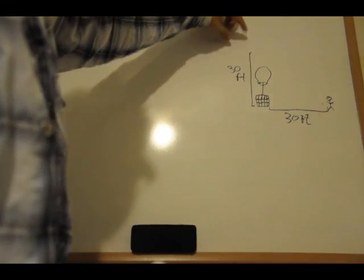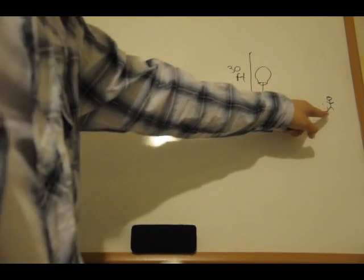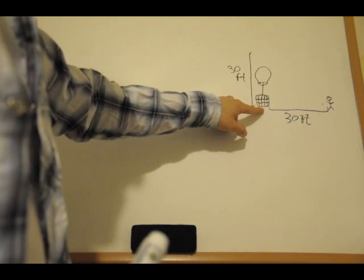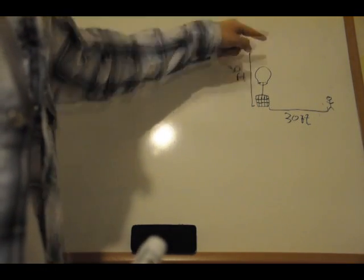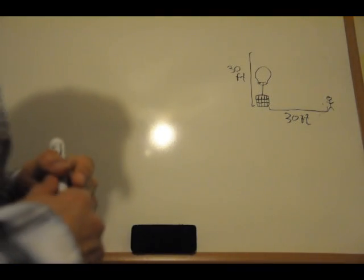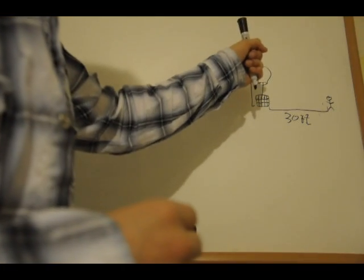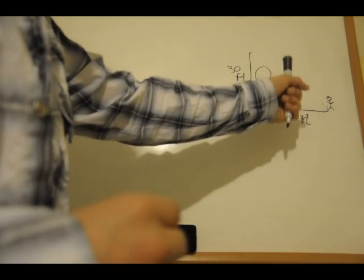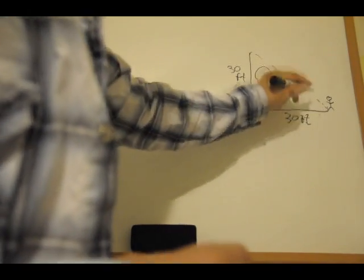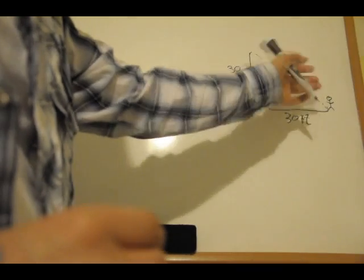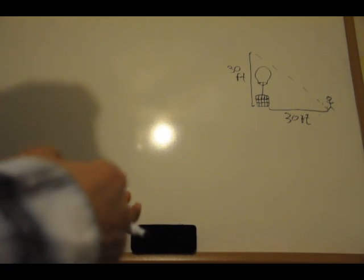We want to see when the balloon is up here, at what rate this angle is changing. When the balloon is on the ground the angle is zero degrees. We want to know how quickly the angle is changing. When the balloon is 30 feet up, it's going to be 45 degrees — since it's a right triangle with equal legs, we get 45 and 45 for those angles.